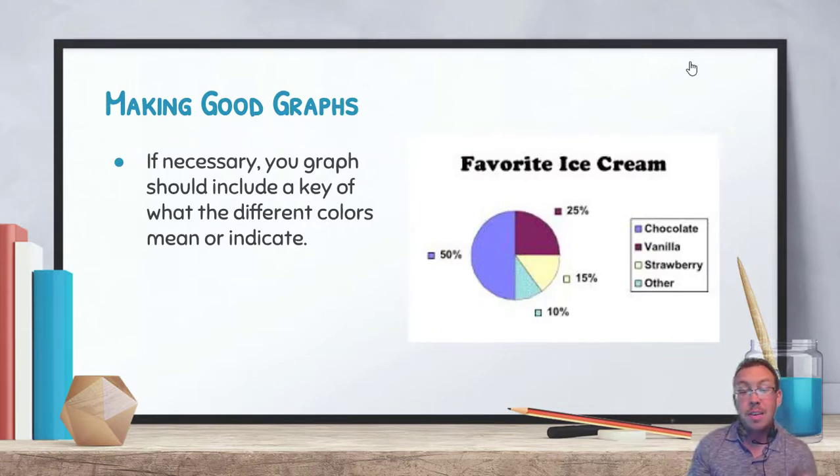Again, just to reiterate, make sure you include a key if necessary. Some graphs don't need a key. Bar graphs typically don't, because again we're breaking the data down into discrete categories. But here without a key in this favorite ice cream pie chart, we would have no idea what those slices of pie represent. Sorry, I just giggle a little bit because I was talking about pie and ice cream, you know, dessert. Yeah, anyways, so you need to make sure you include a key with your graphs if necessary. Some graphs don't need it, but some do, and you should be aware of which ones will need it.